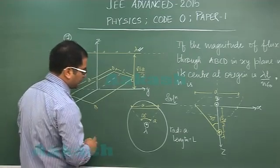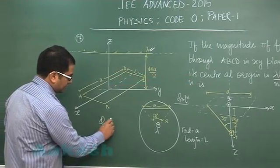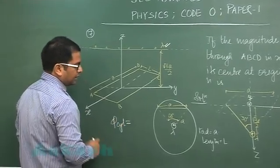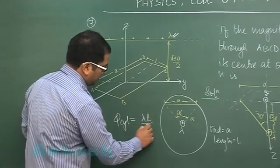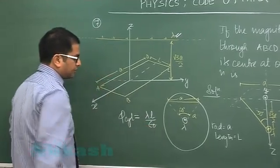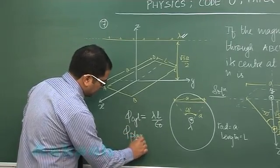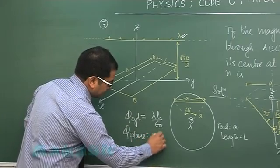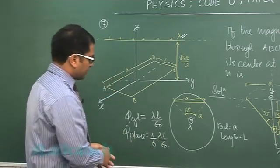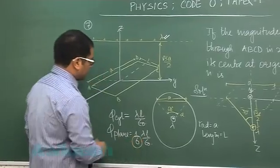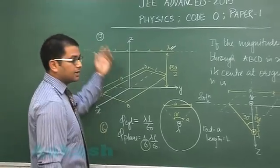So how much would be the flux through the cylinder? The flux through the cylinder would be the total charge enclosed, which would be lambda l by epsilon 0, using Gauss's law. And the flux through the plane, that would be one-sixth of lambda l by epsilon 0. Therefore, the required value of n would be 6. Hence, 6 is the correct integer for question number 7.